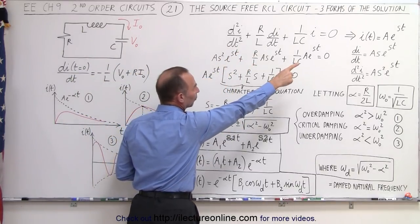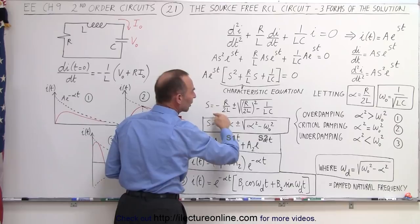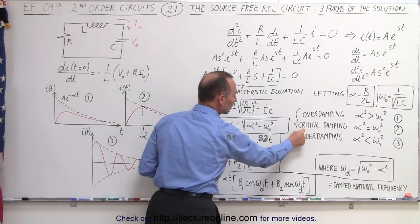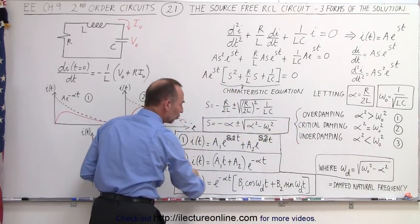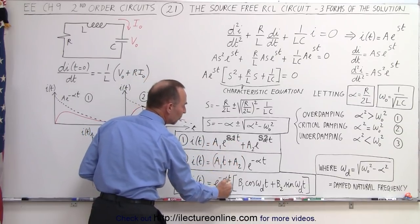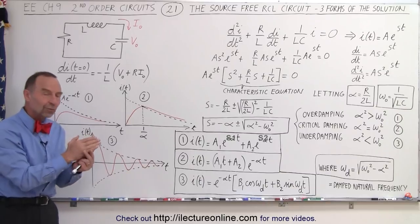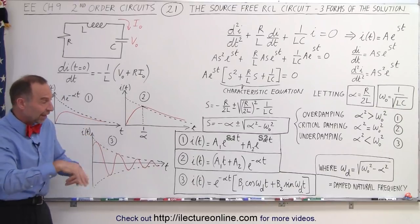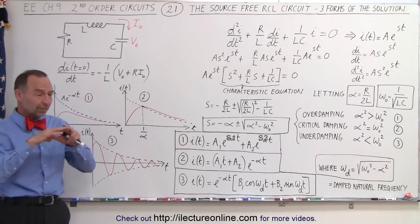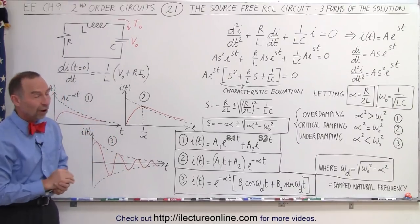To summarize: we start with the original differential equation describing the voltage around the circuit, find the general form of the solution, take the first and second derivatives, and plug them in to get the characteristic equation. Solving that gives three possible solutions — overdamping, critical damping, and underdamping. In each case, it's a matter of finding the constants A1, A2, B1, and B2 to describe the current behavior after the circuit is switched on or off. This has been a good overview of all three types of solutions for the source-free RCL circuit.